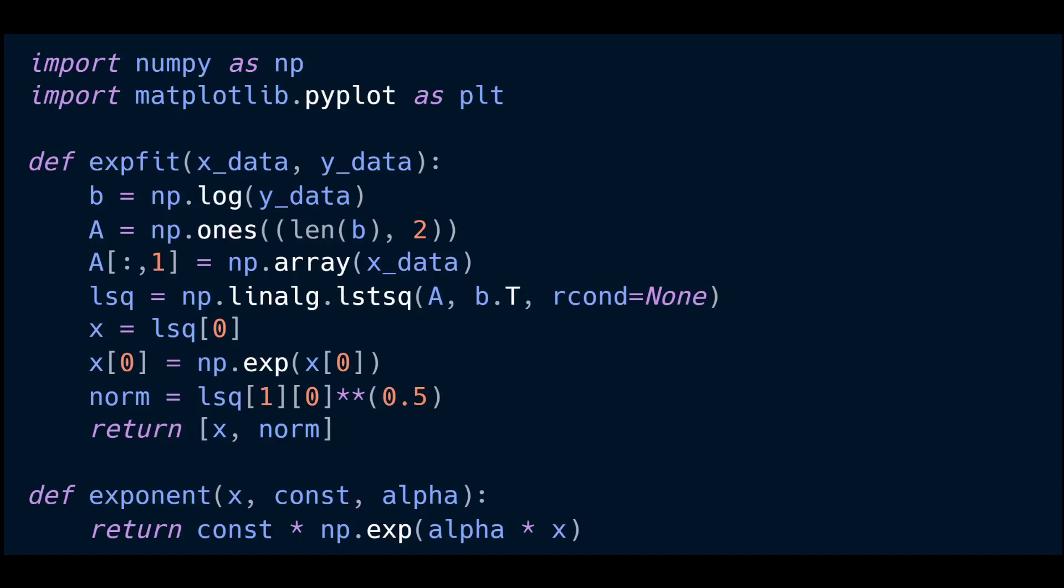We're using the numpy linalg least squares function which is going to perform our least squares approximation. We're passing in our A matrix and b vector transposed because remember otherwise it's going to see that b vector as a row vector rather than a column vector. The first value that the least squares function gives us is our x vector or our approximation.